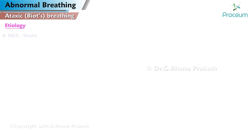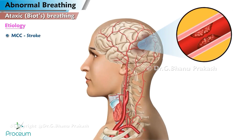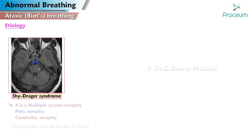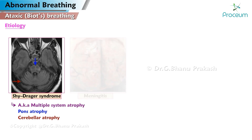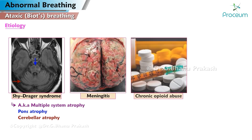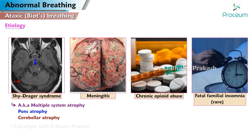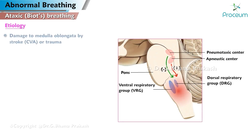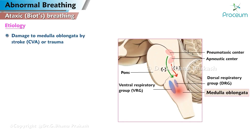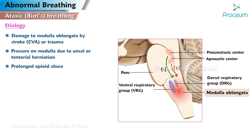Etiology: The most common cause is stroke. Less common causes include neurodegenerative disorders (e.g., Shy-Drager syndrome), meningitis, chronic opioid abuse, and fatal familial insomnia (rare). Biot's breathing is usually caused by damage to the medulla oblongata by stroke, CVA, or trauma, or pressure on the medulla due to uncal or tentorial herniation. It can also be caused by prolonged opioid abuse.